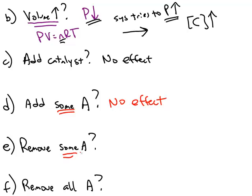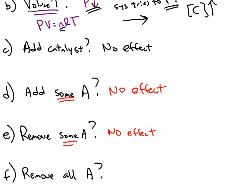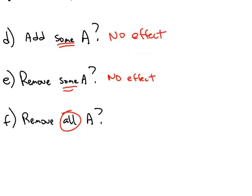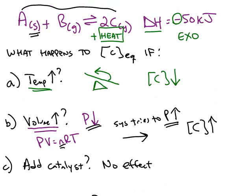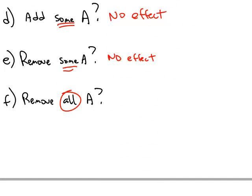The same thing is true if we remove some A. The only way that the concentration of A is important is if we remove all of A. If we remove all of the A, then the forward reaction has to stop because A is needed to react with B. Removing some or adding some is not a stress. But removing all the A will mean that our seesaw is too light on the reactant side. And the products have to make more reactants. Chemical C has to decrease for the reaction to respond to that stress.